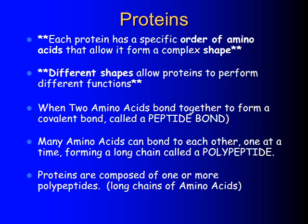When you have a lot of amino acids chained together, this is called a polypeptide chain — remember, 'poly' means many. Proteins are composed of one or more polypeptide chains, which are just long chains of amino acids.